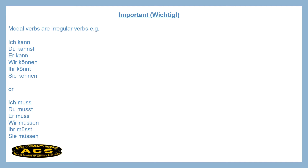Continuing the conjugation of können: er kann, wir können, ihr könnt, sie können. So the infinitive is können — just like the first and third person plural: wir können, sie können. But in the singular forms — ich kann, du kannst, er kann — you have an 'A' vowel instead of the Ö umlaut.